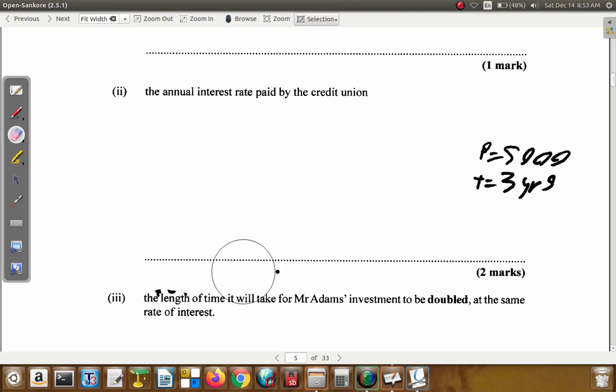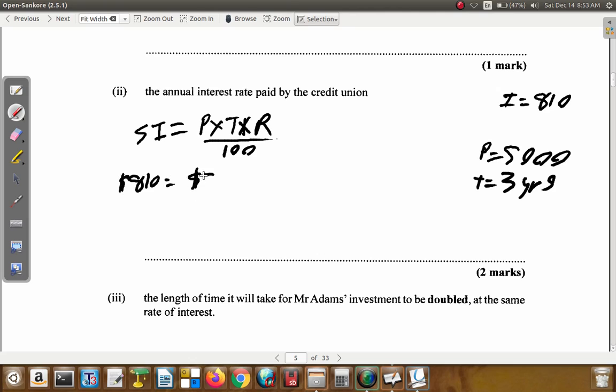Remember, the interest was $810. So we have a formula. The simple interest is principal multiplied by the time multiplied by the rate divided by 100. So what we have is $810 equals the principal of $5,000 multiplied by the time is three years multiplied by the rate whatever it is divided by a hundred.